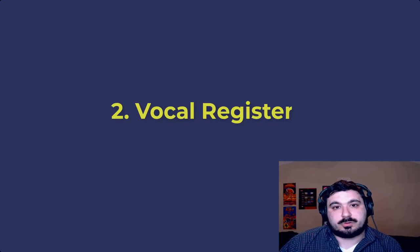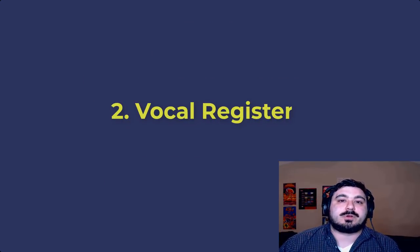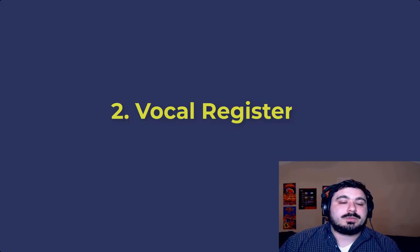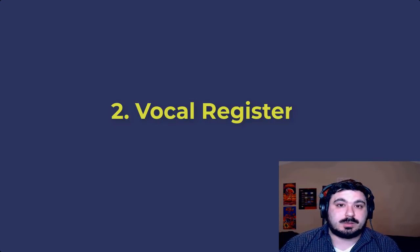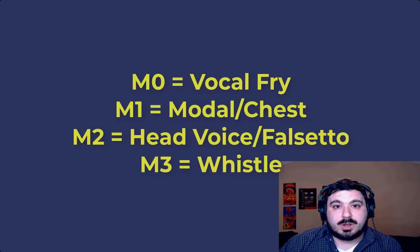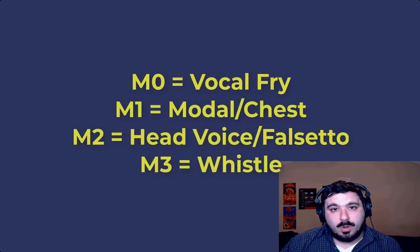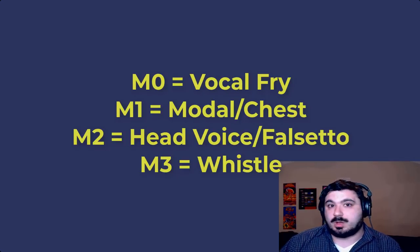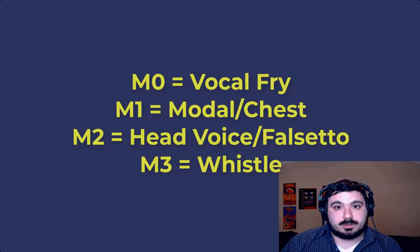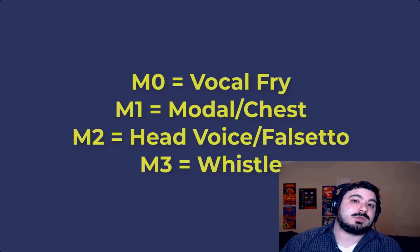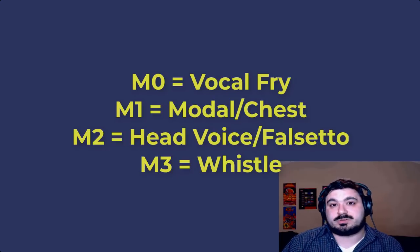Next up is vocal register. Your vocal register refers to the placement and usage of the voice. There are several different ways people define these, but here are the registers as almost any vocal academic will tell you: the M0 register, which is the fry register; the M1 register, which is the modal register or chest voice; the M2 register, which is the head voice or falsetto; and then the M3, which is the whistle register.